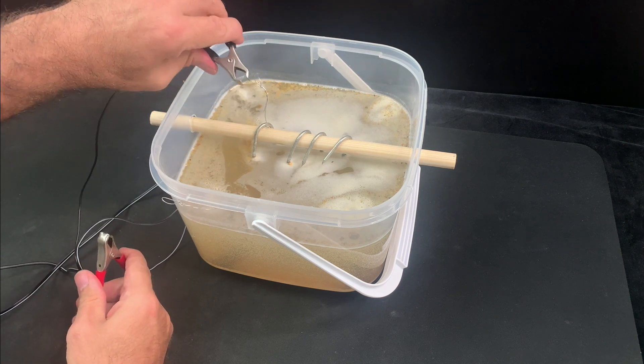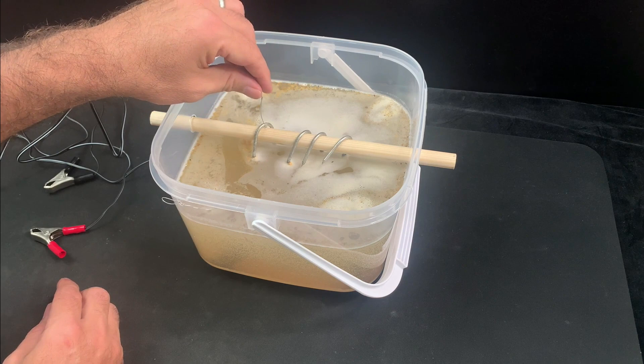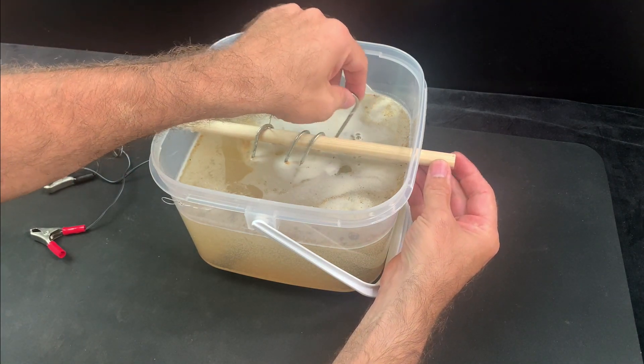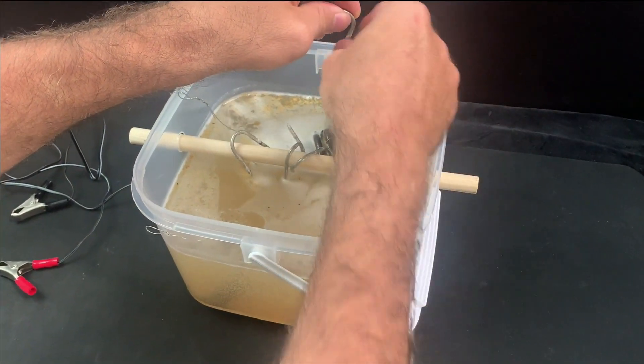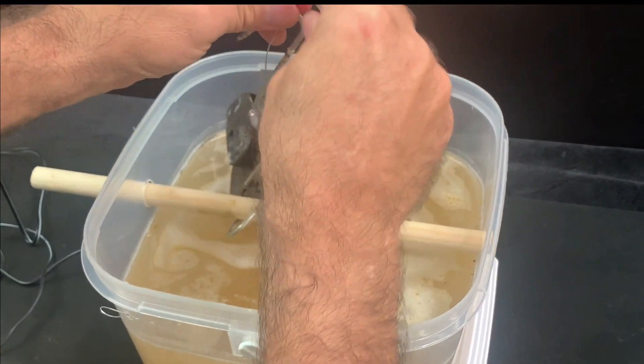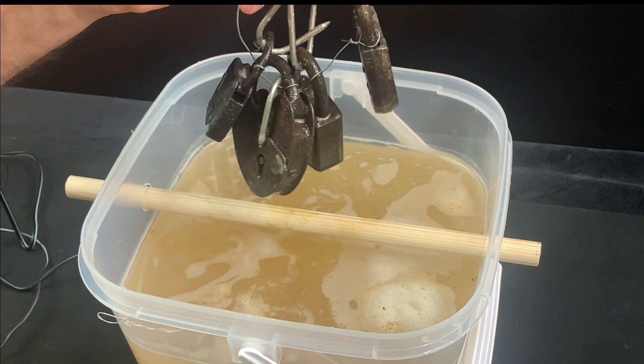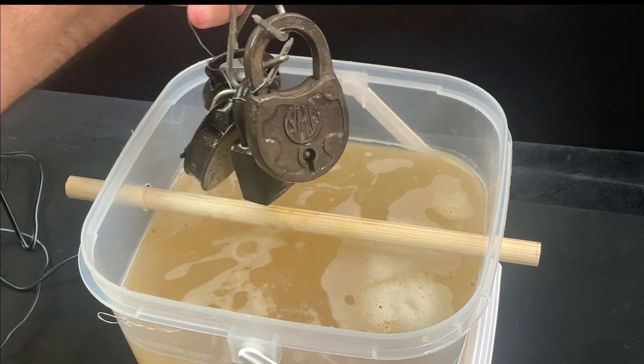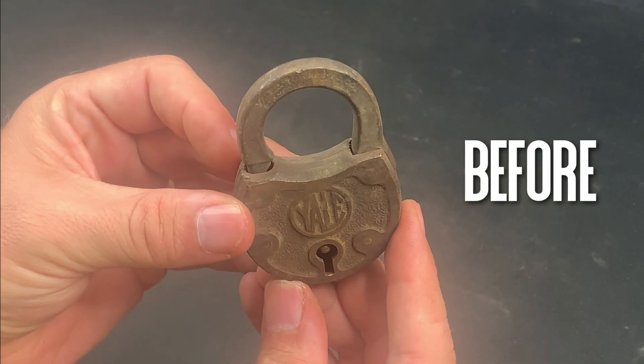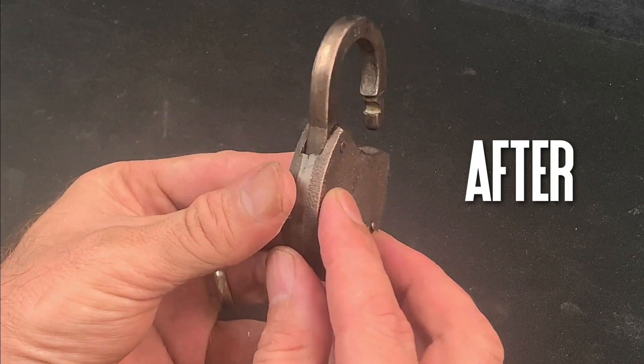Naturally the electrolysis bath will form a scummy surface and the solution will become discoloured but this is to be expected and the slurry can be disposed of using a standard drain without damaging the environment. Once you're satisfied with the results it's just a case of turning off the power supply, removing the locks from the solution, giving them a rinse in warm water to remove any loose flakes of rust from inside the lock mechanism and then air dry them before applying a layer of lock oil to prevent flash rusting. Then you can sit back and admire the results.